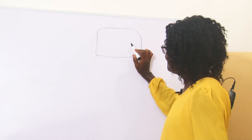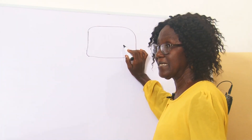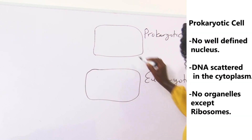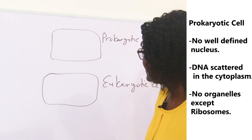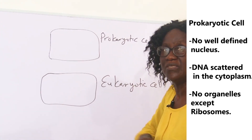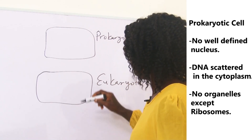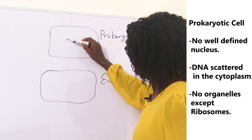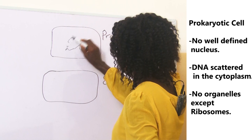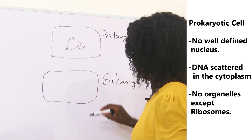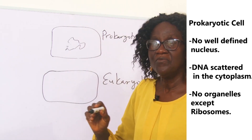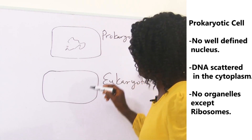What are prokaryotic cells? A prokaryotic cell doesn't have any well-defined nucleus. The DNA is scattered in the cytoplasm. And it doesn't have organelles except ribosomes.